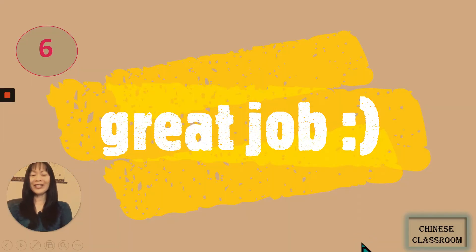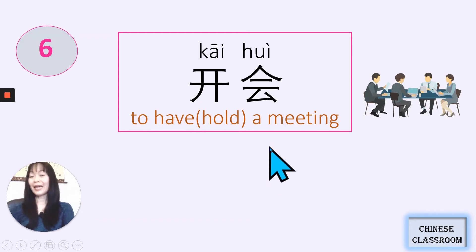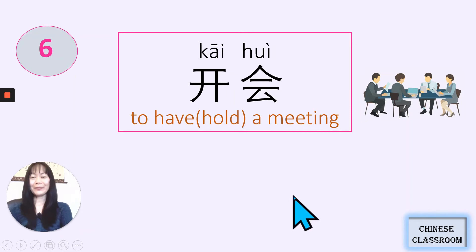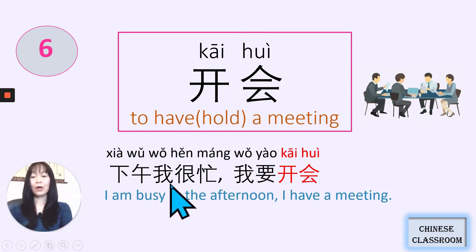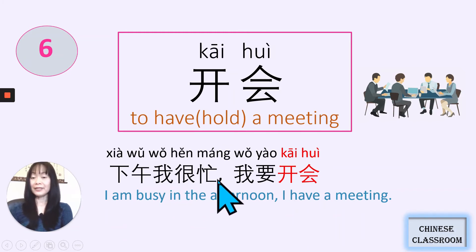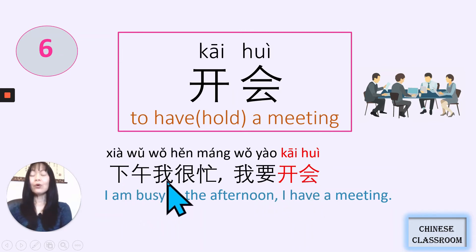Now let's move on to the 6th one: 开会. 会 meaning meeting. 开会 — have a meeting. 他们在开会 — they have a meeting. 下午, 我很忙, 我要开会. 下午 — afternoon. 我很忙, 忙 — busy. 我很忙 — I am busy. 我要开会 — 要 means 'want to' or 'going to.' 开会 — meeting. So, I have a meeting. 下午, 我很忙, 我要开会.